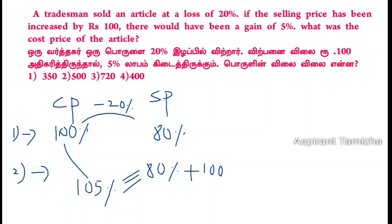What is the cost price of the article? The cost price of the article is 100%. There is a 5% profit. And Rs. 100 difference between the two selling prices.